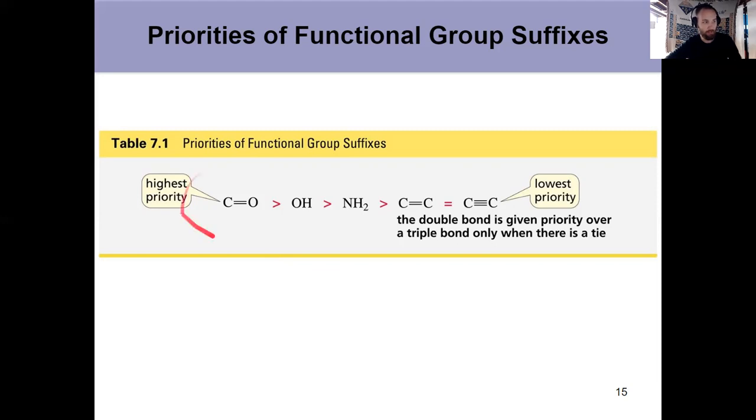A carbonyl is at the top, followed by an alcohol, followed by an amine, followed by a double bond and a triple bond. So if you have two or three of these in the same molecule, the lower number goes to whatever has the higher priority. So if you have a carbonyl, that's going to control it. An alcohol or an amine, you're going to target those and give those the lower numbers before you worry about an alkene and an alkyne.